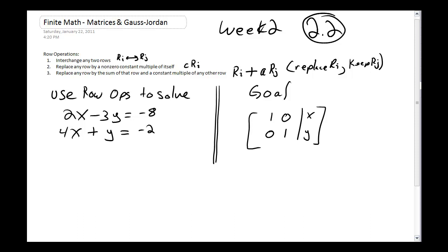We can replace any row by a non-zero constant multiple of itself. It sounds a little scary. All we're saying is you can multiply a row by a constant number. Multiplying by zero doesn't really help us, so we don't do it. And finally, for number three, this is the most common one that we use. You can replace any row by the sum of that row and a constant multiple of any other row.